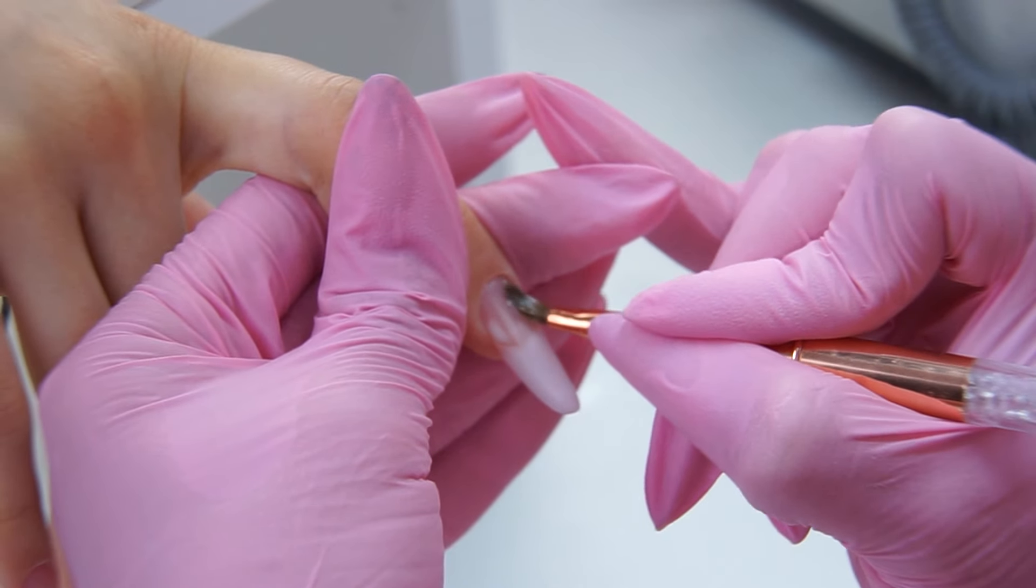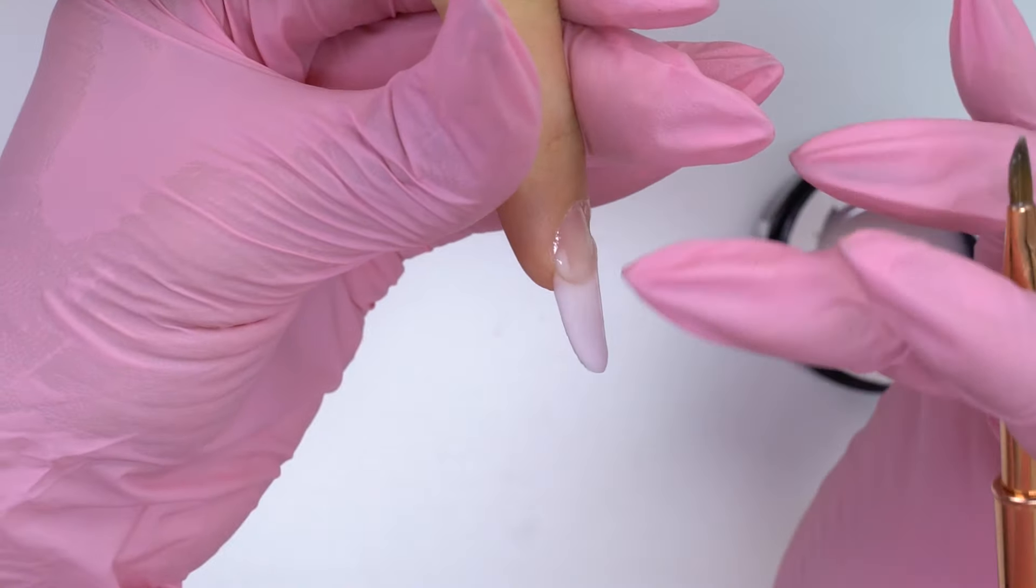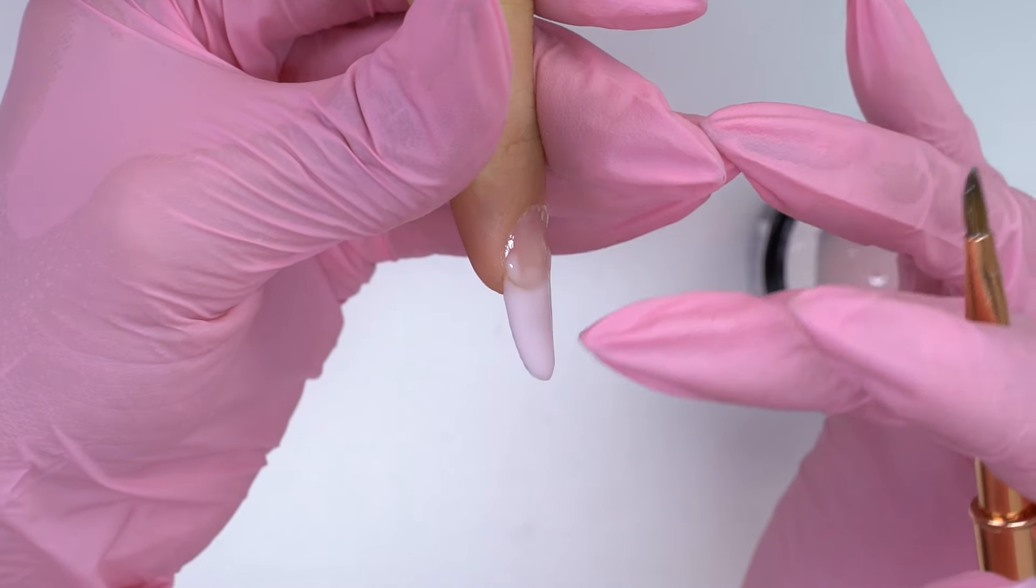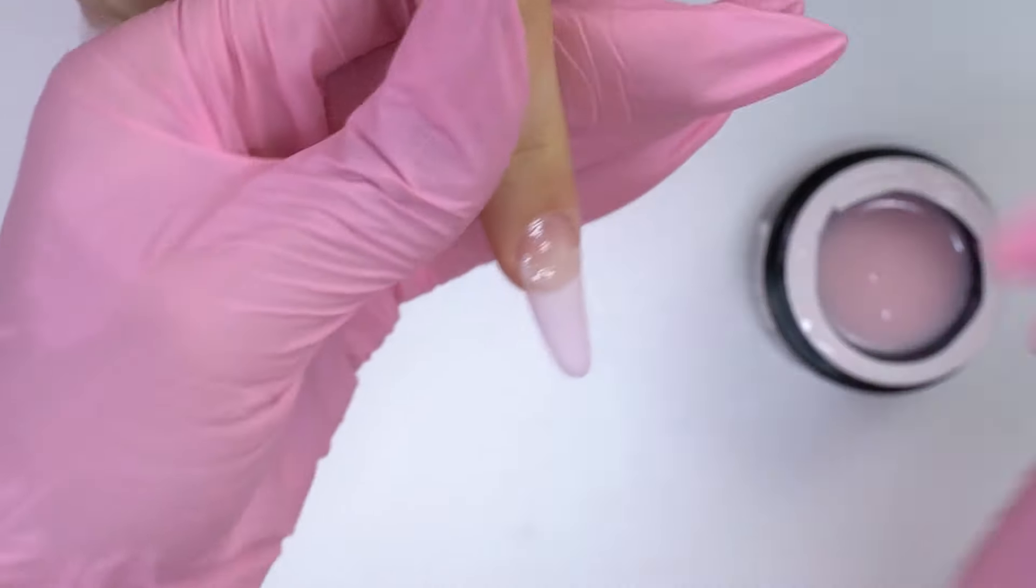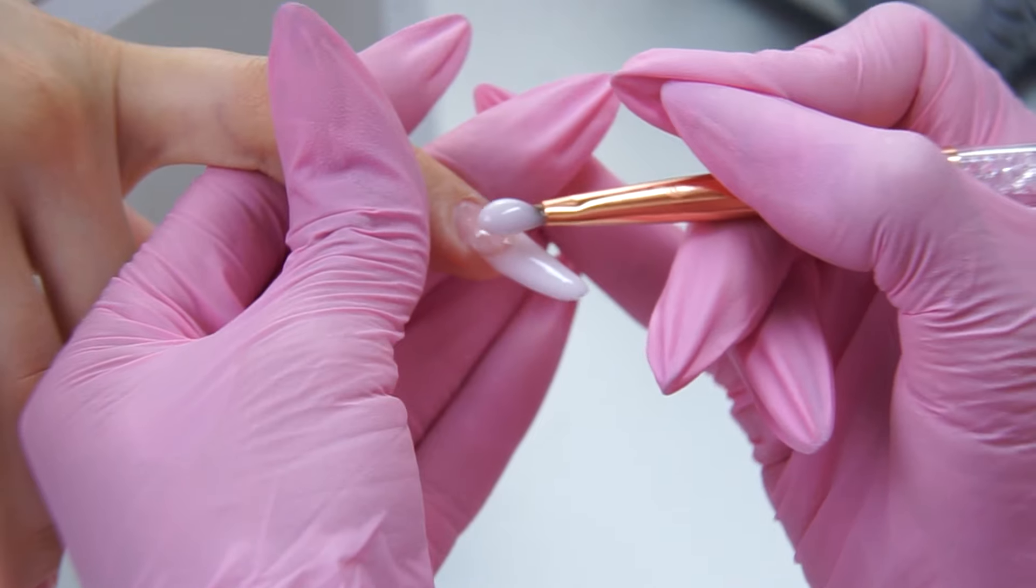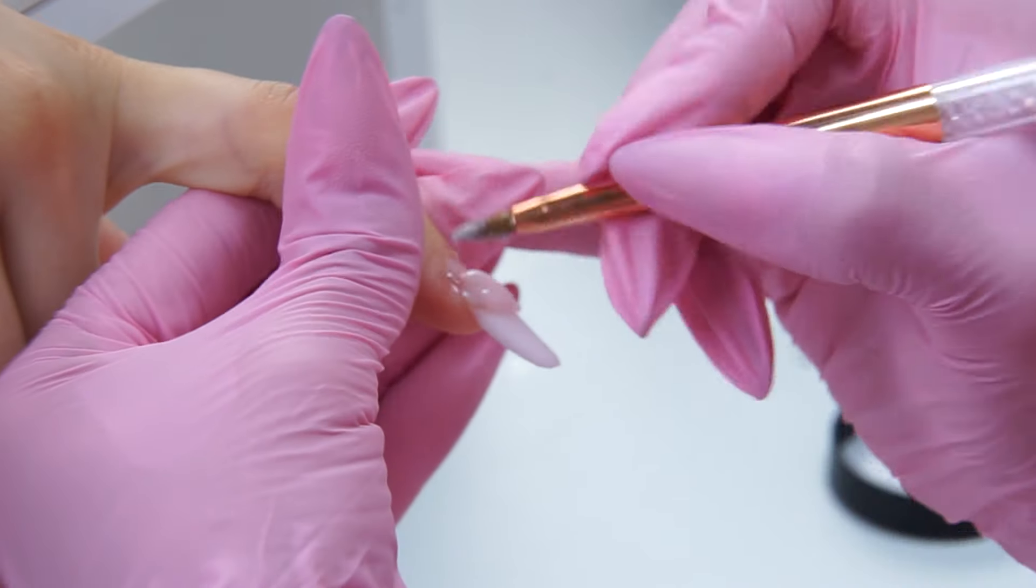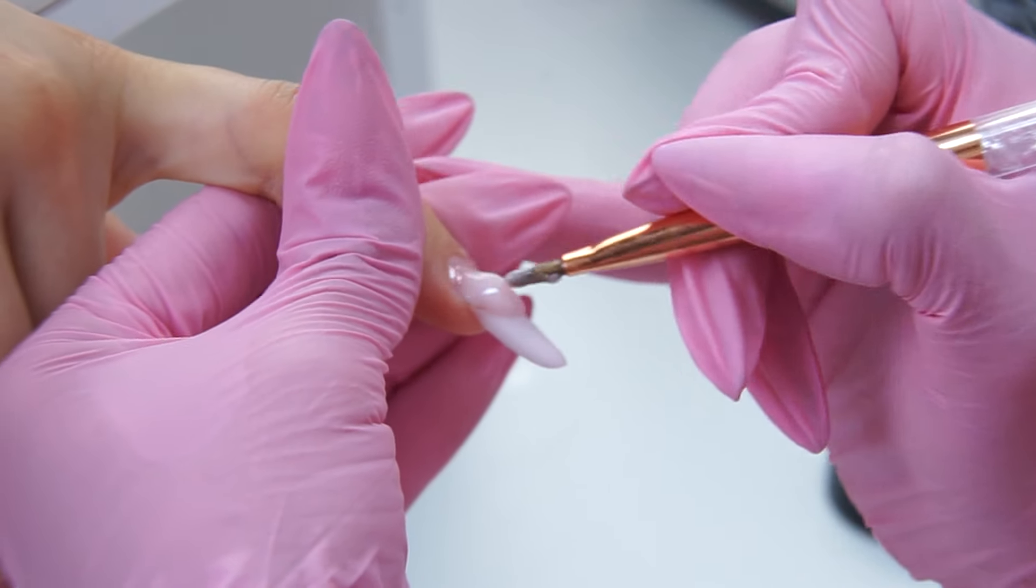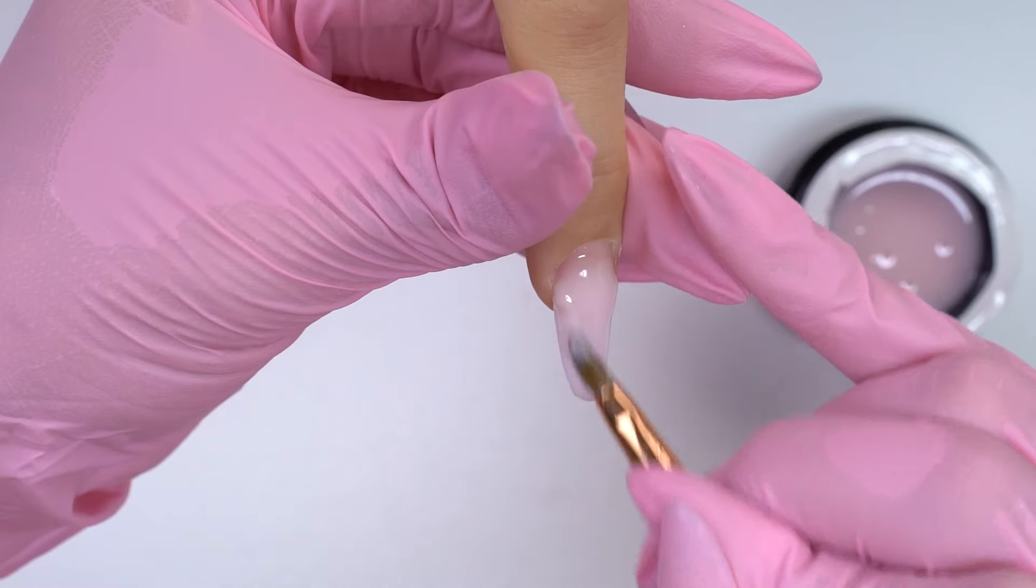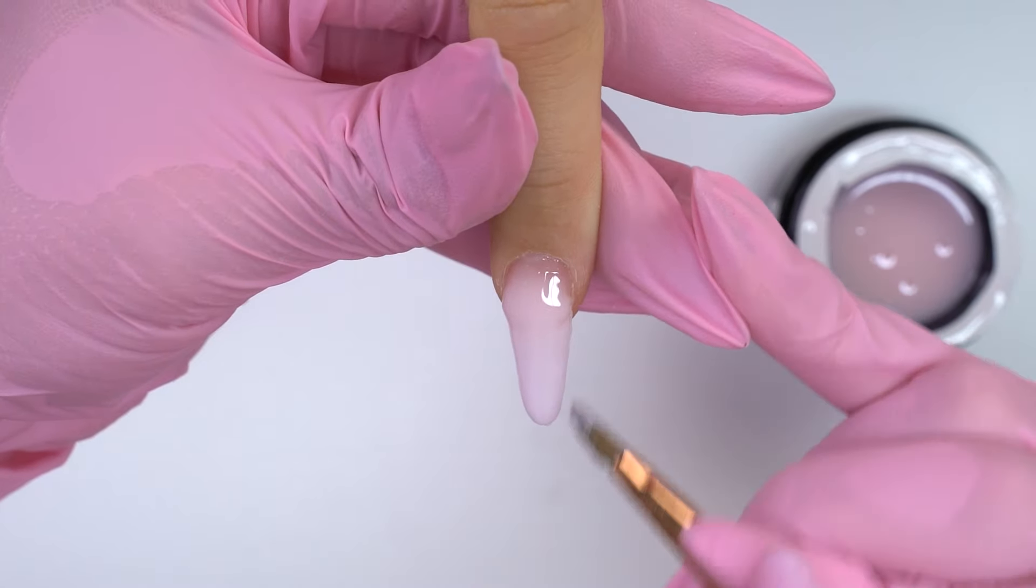I will apply two drops. The first one is put in the center of the nail plate. I spread it to the central part of the natural nail. And pull it down. This way, I fill in the central area. Cure the lamp.